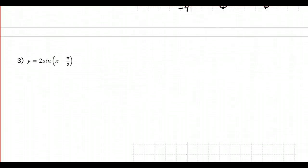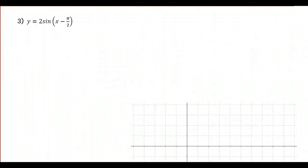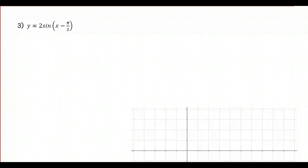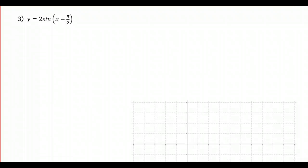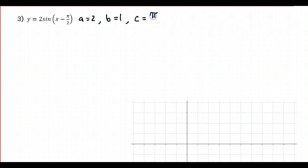Moving on to example 3 — notice now we've got a value of c, which is going to give us a horizontal translation or phase shift. Let's find a, b, c, and d. a is equal to 2, b is still equal to 1. In this case, c is equal to positive π over 2. Be careful here because our standard form says bx minus c, so the only way to get a plus is if it's minus a negative c — we'll look at that in the next example. d is 0.